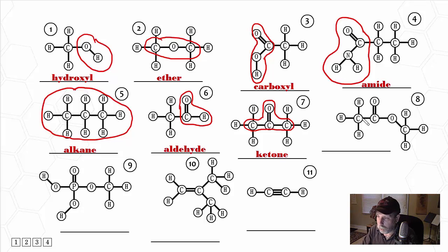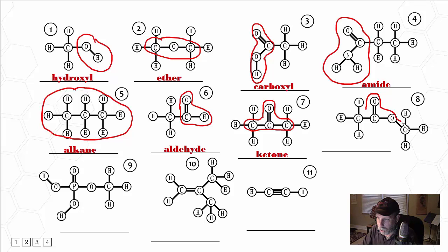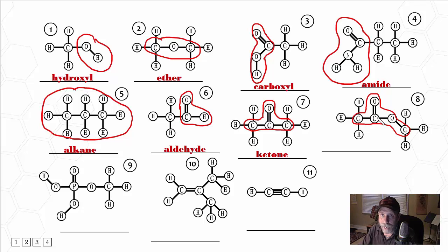Molecule number eight: C double bond O, carbon group on the left, but on this side be careful — there is a carbon group, but there's an oxygen in the middle. So we circle that part: the oxygen, the carbon, and the carbon. When we have a C double bond O with a carbon group on one side, and an oxygen-carbon group on the other side, that is an ester.